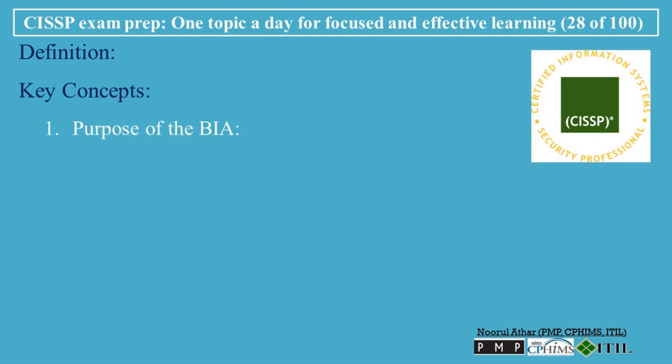Key Concept 1 — Purpose of the BIA: The primary goal of a BIA is to identify the organization's most critical business functions and quantify the impact of their disruption. This information is used to prioritize recovery efforts and allocate resources effectively in a Business Continuity Plan, BCP, or Disaster Recovery Plan, DRP. The BIA focuses on the "what" — what are the critical business functions and what are the impacts of their downtime — rather than the "how" (how to recover), which is covered by BCP and DRP.